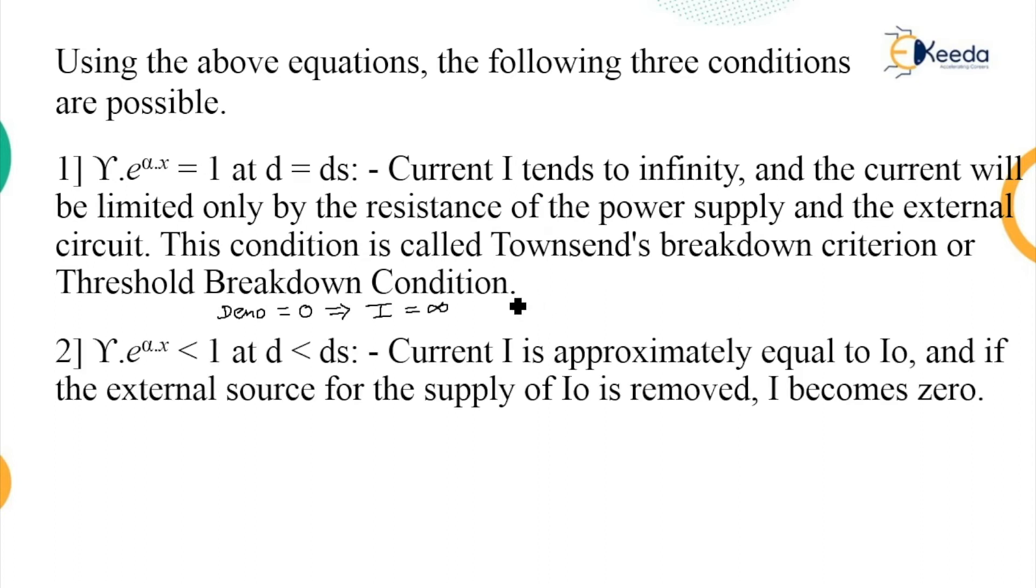Second, when this gamma e to the power alpha D or alpha X is less than 1, that is when D is less than a sparking distance, current I is approximately equal to I0, and this I0 is basically the initial current due to the initial number of electrons emitting from the cathode. And if the external source for the supply of I0 is removed, that current becomes zero, as there is no supply voltage the initial current is zero and hence the total current is also zero. This is what the second condition.